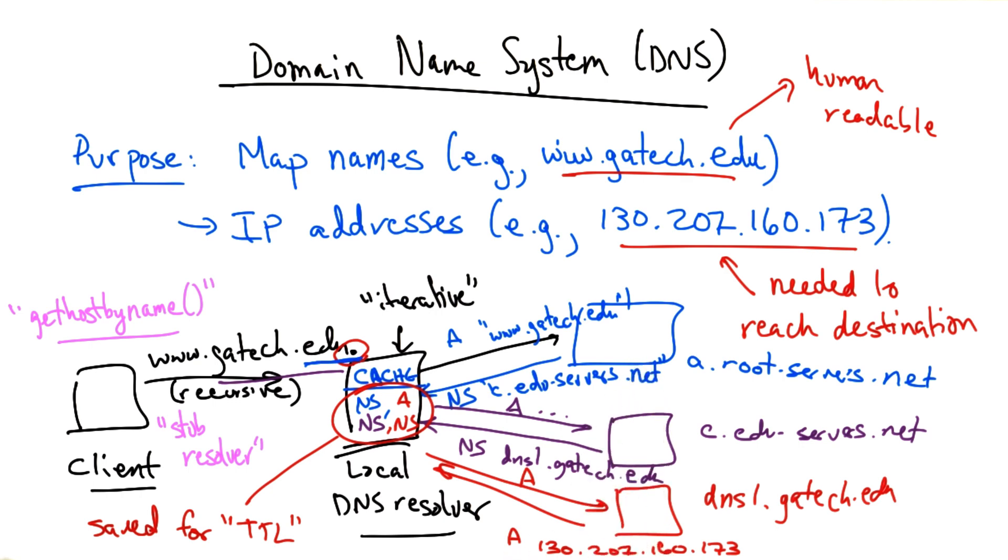The mapping for a local name, such as www.gatech.edu, on the other hand, might change more frequently. And thus, these local TTLs might need to be smaller.